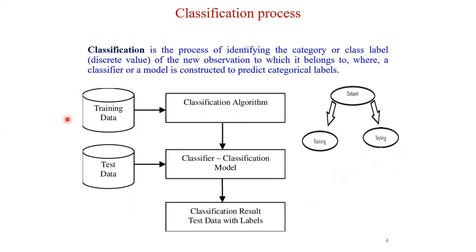We supply the training data and train the selected classification algorithm to construct the model. After the model is constructed, we test its performance by supplying the testing data, which should not include any labeled examples. The test data is used to classify unknown examples. Since we already have the original labels, we compare those with the predicted classes to evaluate the performance of the classifier.